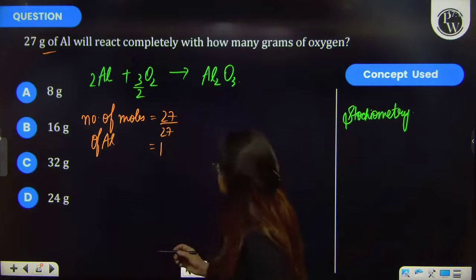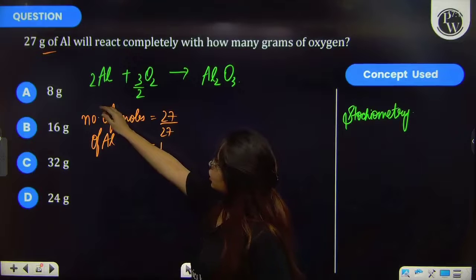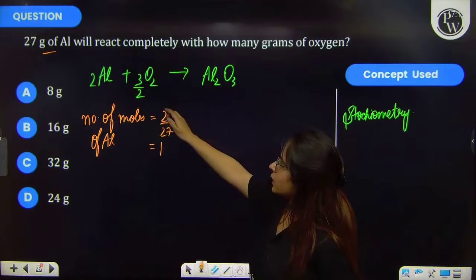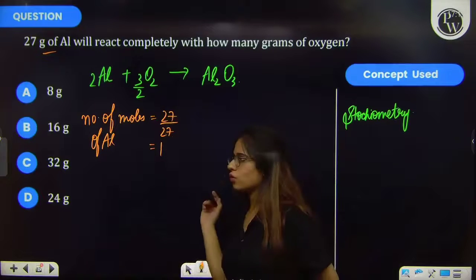Now on the basis of stoichiometry we can see that 2 moles of aluminium is reacting with 3/2 moles of oxygen.